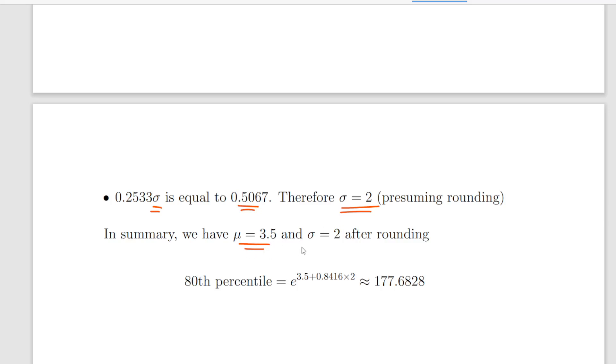So in summary, mu is equal to 3.5 and sigma is equal to 2. That sort of makes sense. Now you get a value like 1.9997 in a question like this, just assume it's rounding error.